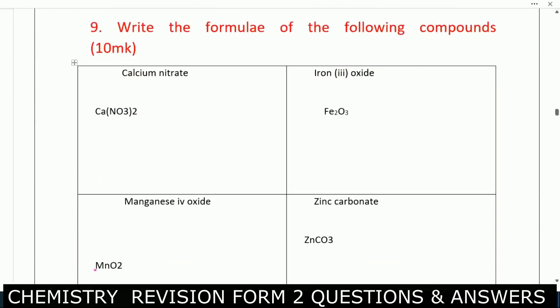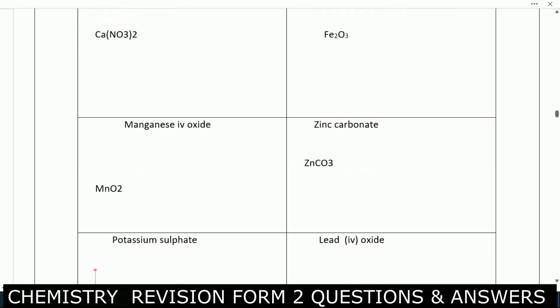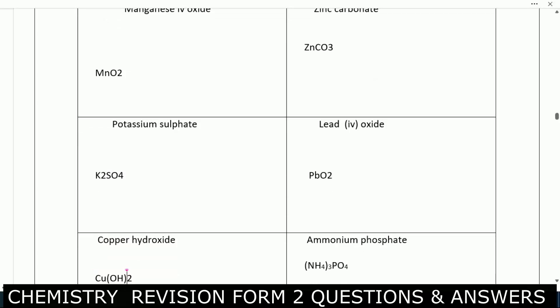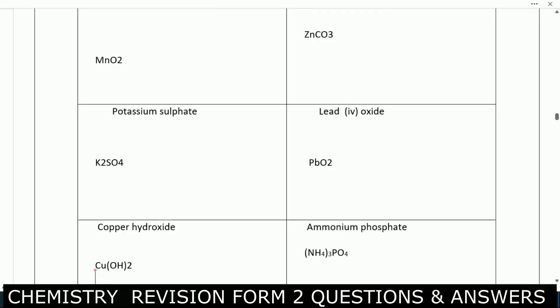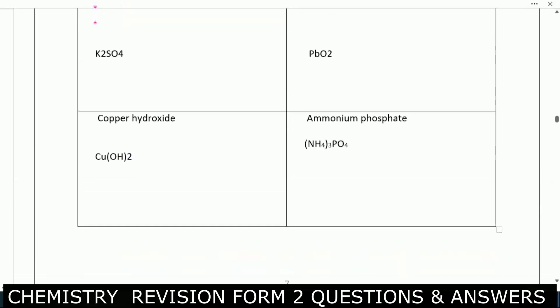Question nine: write the formula of the following compounds — calcium nitrate, iron(II) oxide, manganese(IV) oxide, zinc carbonate, potassium sulfate, lead(IV) oxide, copper hydroxide, aluminium phosphate, and ammonium phosphate. The formulas for each are shown as written.